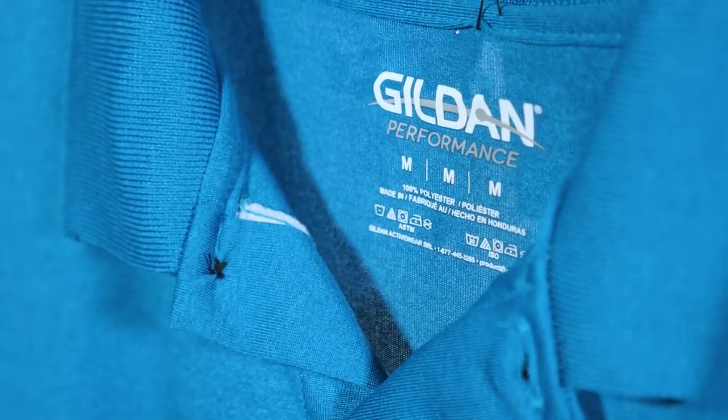There's a heat transfer label on the inner nape of the shirt, as well as what's called a joker label on the inner side seam, which has such details as fabric contents, wash instructions, and the country of origin.